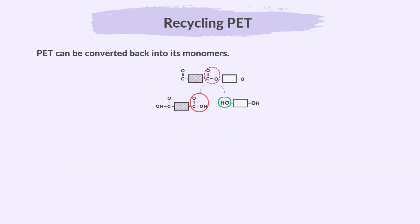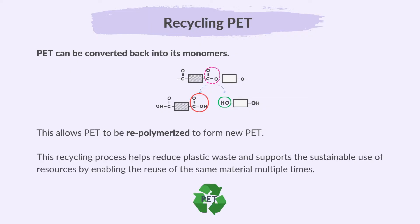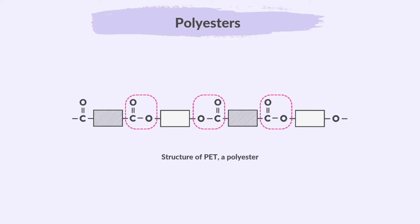PET can be converted back into its monomers, which allows PET to be re-polymerized to form new PET. This recycling process helps reduce plastic waste and supports the sustainable use of resources by enabling the reuse of the same material multiple times. This is the structure of PET, a type of polyester formed through the condensation polymerization of a dicarboxylic acid and a diol.